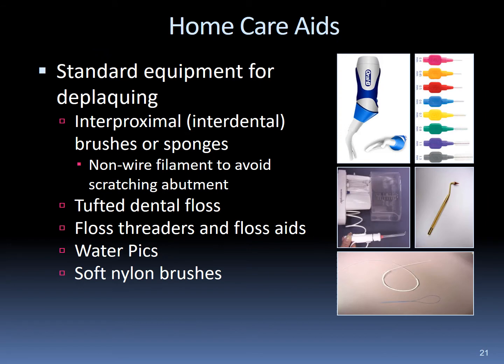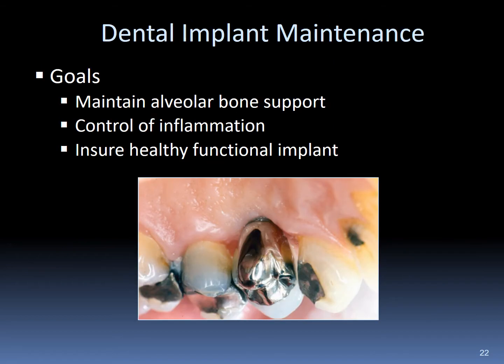Various hygiene aids are recommended for implant deflaquing: non-wire interdental brushes, interdental stimulators, floss threaders, superfloss, floss aids, and water picks are among the home care aids recommended for implant patients. The goal of implant maintenance is to ensure the integrity of the alveolar bone support by controlling inflammation for the longevity of the health and function of the implant.